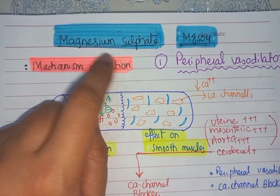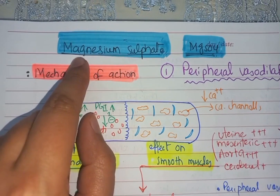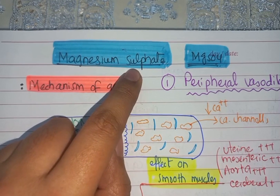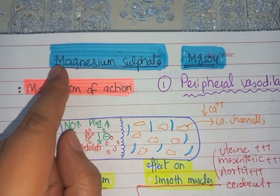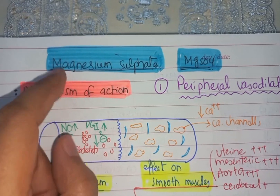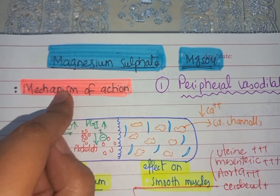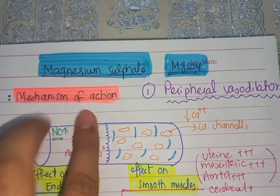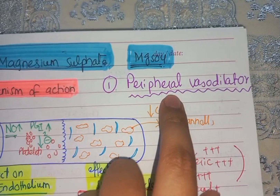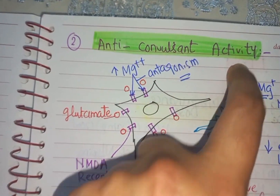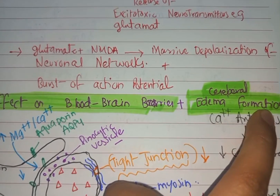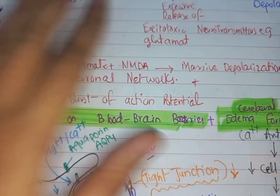Assalamu alaikum dear friends. Today we are going to study about magnesium sulfate. Magnesium sulfate is used in severe preeclampsia and in eclamptic patients. In today's discussion we are going to study about the mechanism of action of magnesium sulfate. Magnesium sulfate has three main mechanisms: peripheral vasodilatation, anti-convulsant activity, and effect on the blood-brain barrier decreasing cerebral edema formation.